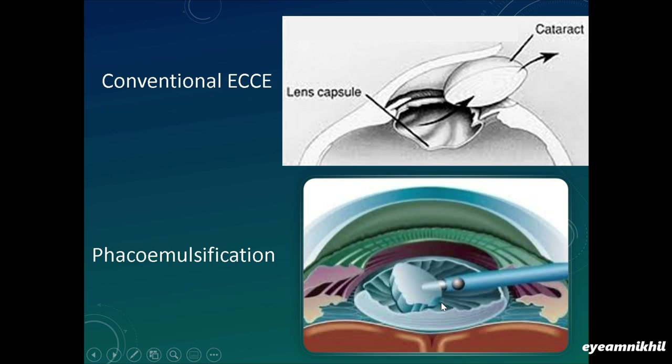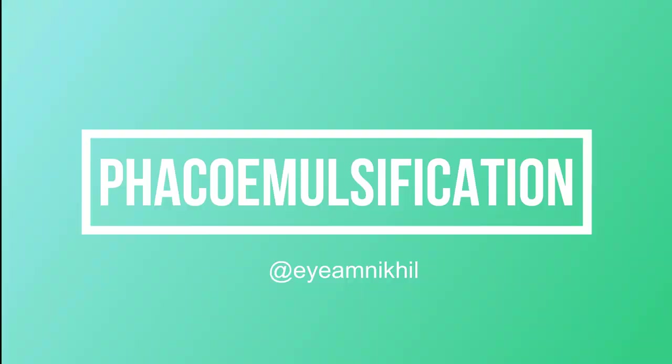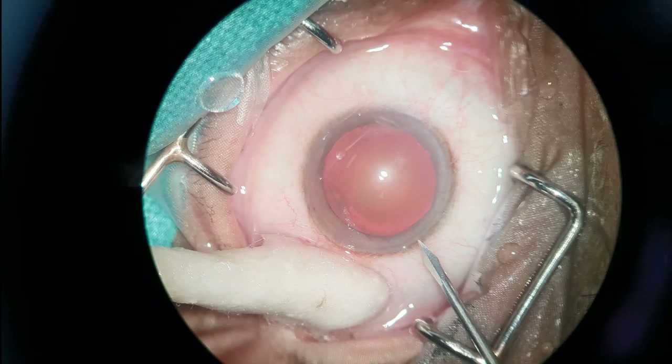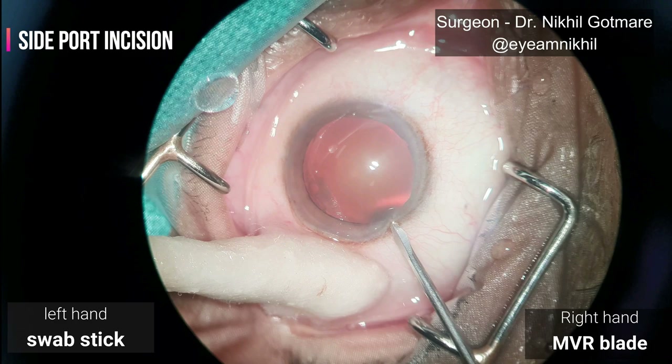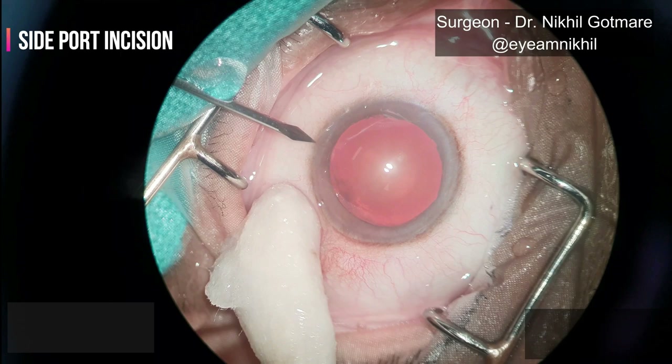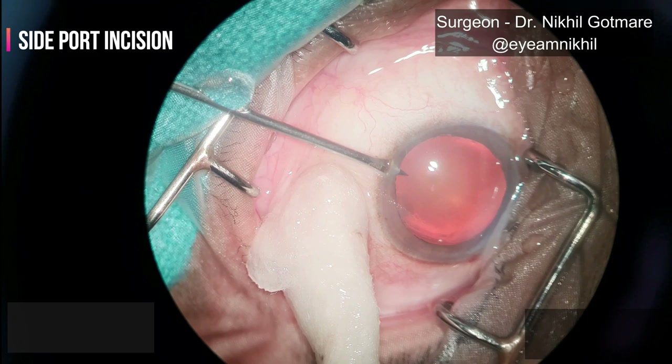With advancements in phaco machines, phaco is becoming safer even in hard cataracts. The choice of surgery depends mainly on hardness of nucleus, availability of phaco machines, surgeon's experience, and ultimately the surgeon's choice. The first surgery we will discuss is phaco emulsification. Side port incisions are made at the limbus using an MVR or V-lance blade, and the capsule is stained using trypan blue dye under an air bubble.